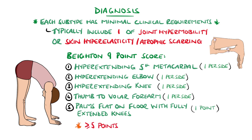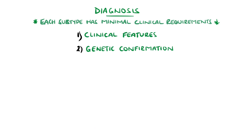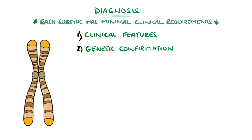This gives a total of nine points, and a score of five or above is generally accepted as indicating hypermobility. For confirmation, there is the option of genetic testing to identify the gene variants present, with hypermobile EDS being the exception as it is a clinical-only diagnosis.